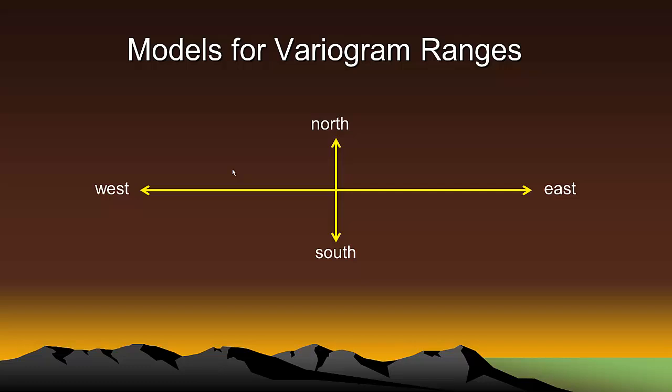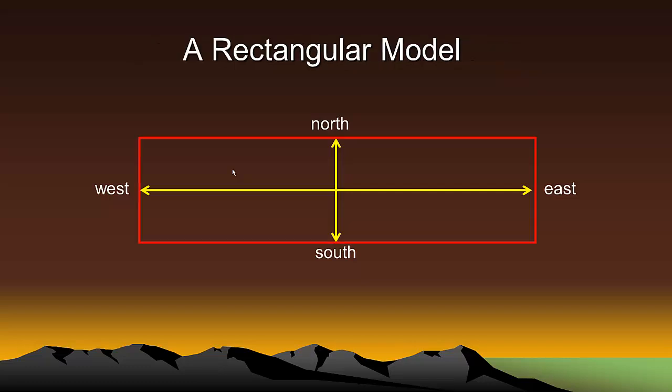However, in order to map the ranges in other directions we are going to have to resort to using a model of some kind. For example, this is a rectangular model of the variogram ranges in all directions. It is a simple model and easy to work with. We can map the north-east variogram range or the south-southwest variogram range or the west-west-north variogram range with this model. In fact, we can map the variogram range for any direction using this model.